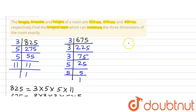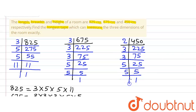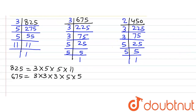Now for the third number, 450. First, 450 is divisible by 2, giving 225. 225 is not divisible by 2, so moving to 3: dividing gives 75, then 25, then 5. So 450 = 2 × 3 × 3 × 3 × 5 × 5.